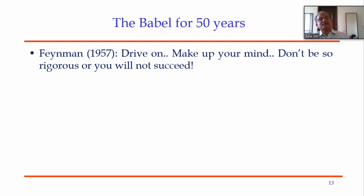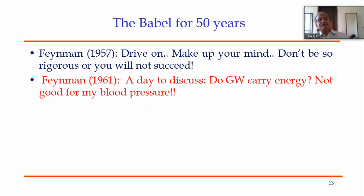A hard-nosed physicist like Feynman was getting very frustrated. In 1957, at a general relativity meeting, he reportedly said: 'Drive on, make up your mind. Don't be so rigorous or you will not succeed.' Four years later, at another GR meeting in Warsaw, he wrote to his wife: 'A day to discuss, do gravitational waves carry energy? This is not good for my blood pressure.' It took 40 or 50 years to establish a conceptual framework to determine without ambiguity whether gravitational waves exist in GR and what properties they should have.